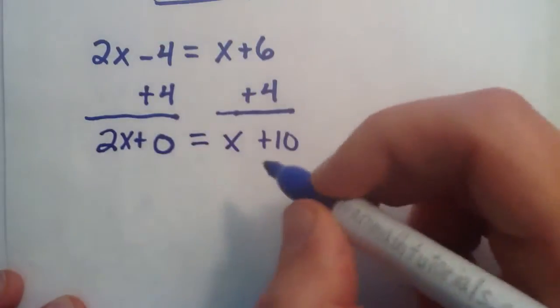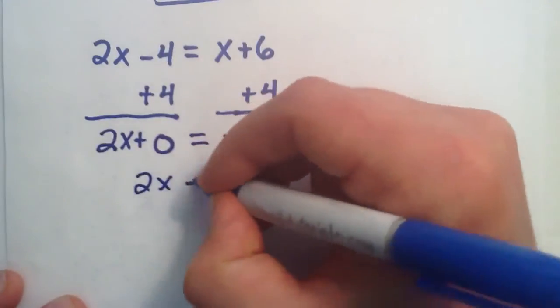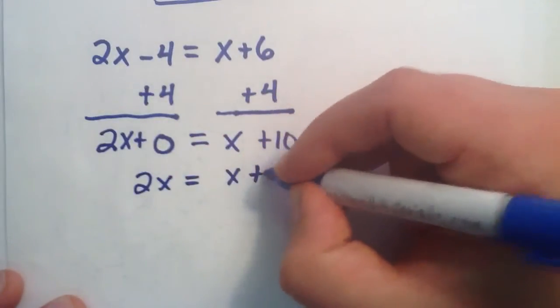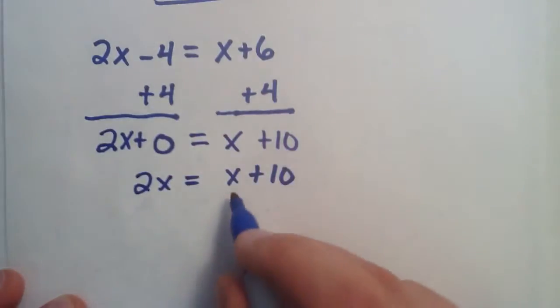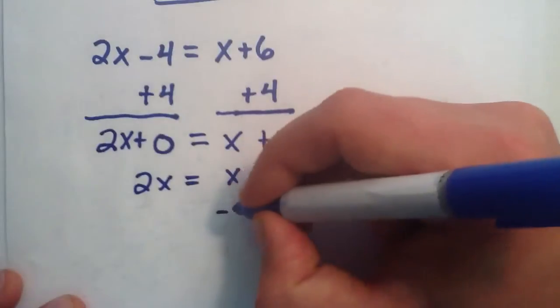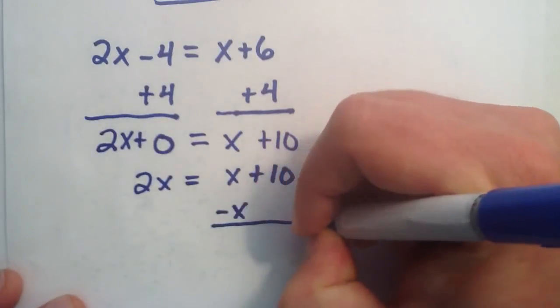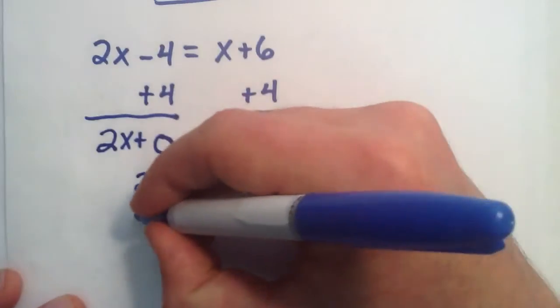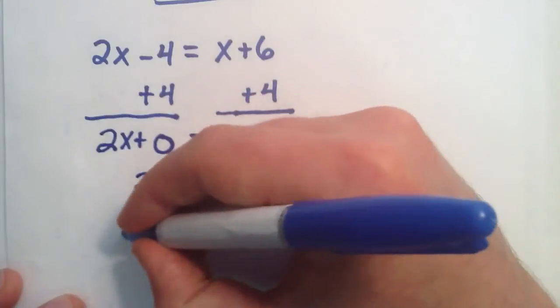So, we have 2x equals x plus 10. Now, we want to get rid of this x on this side. So, that we just have x equals some number. So, we can take away an x from this side. And if we do that, we have to take away an x from the other side.